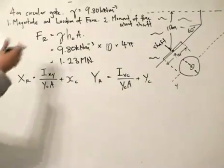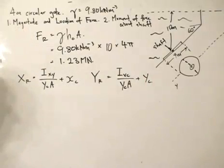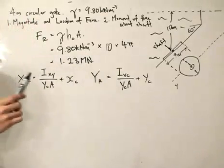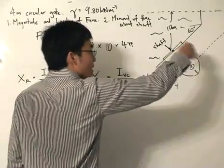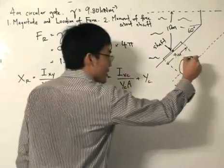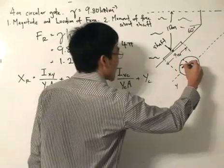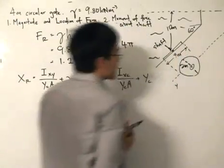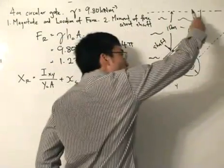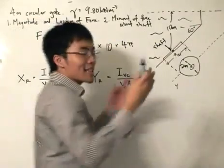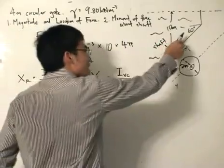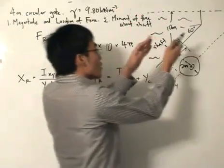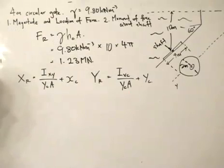These are two key formulas to assimilate when dealing with fluid mechanics problems. Now xR — we can leave that aside. Due to the circular disk's symmetry, we know xR is simply 2 meters. It doesn't really matter because the gate is going to rotate this way, and due to symmetry in the x-axis, we don't have a meaningful reference point. What is more important is the y-coordinate of the center of pressure.